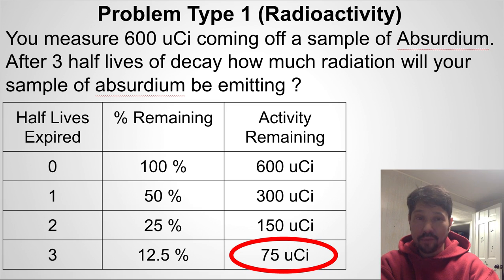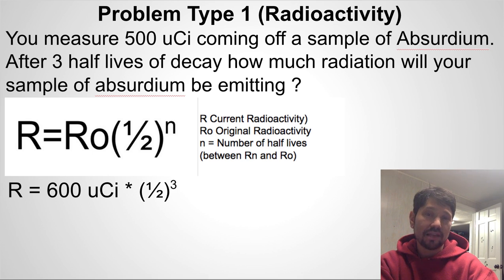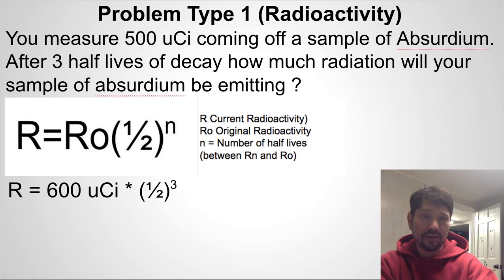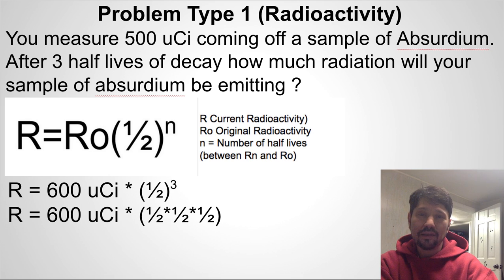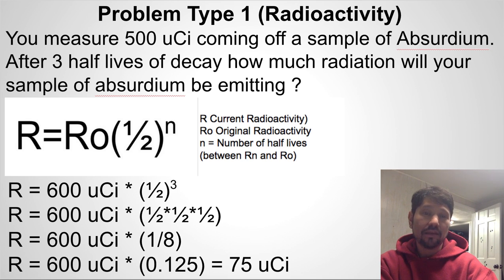To do this with the formula, we plug in 600 microcuries as the original radioactivity, and three as the number of half-lives for N. We'd have 600 times (1/2)³, which is (1/2)×(1/2)×(1/2), the same as 1/8. So 600 divided by 8, or 600 times 1/8, comes out to 75 microcuries — same answer.